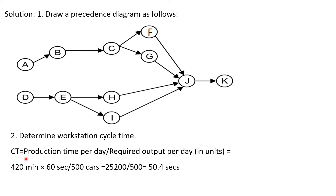Next, determine the workstation cycle time. Cycle time equals production time per day divided by required output per day. The given production time is 420 minutes, which we convert to seconds: 420 times 60 divided by 500 cars equals 50.4 seconds. This means a single car requires 50.4 seconds to complete at each workstation.